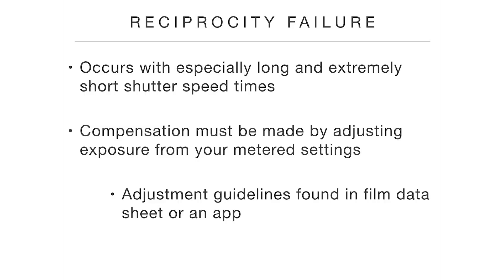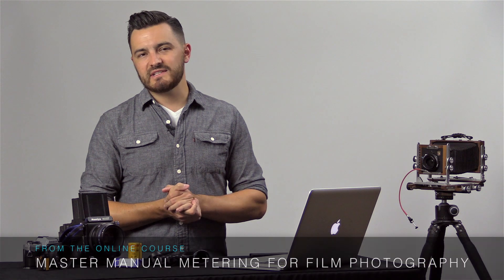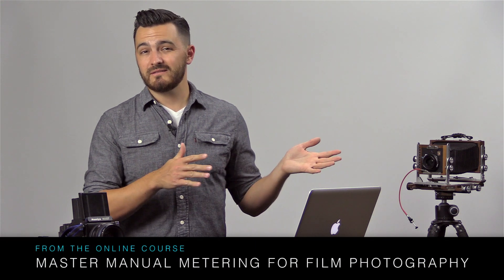Reciprocity failure can also cause a color shift. Primarily in color reversal film it's a big problem, because you can't really correct color as easily after processing. On print film you can usually correct that afterwards. For example, Velvia shifts towards a magenta color on really long exposures, but you can correct for that as well using filters.